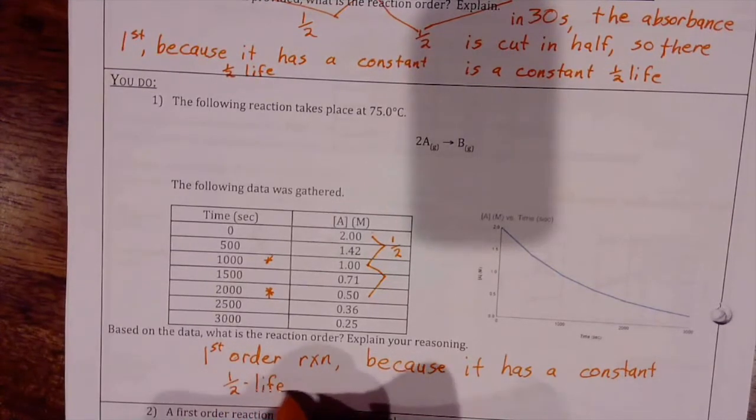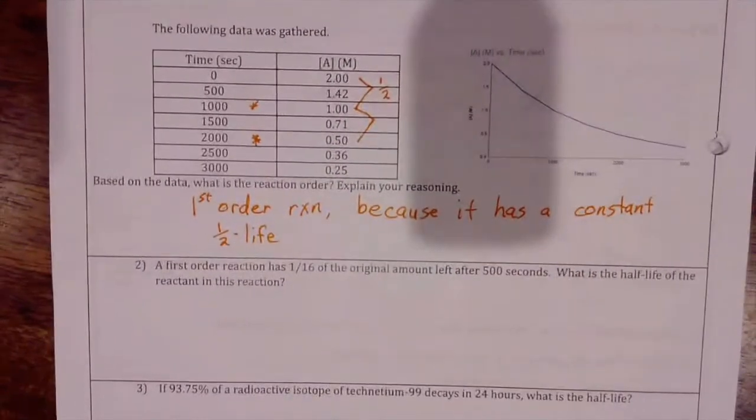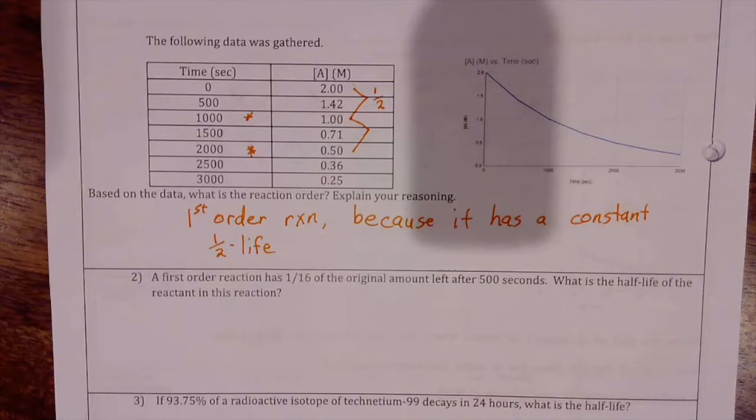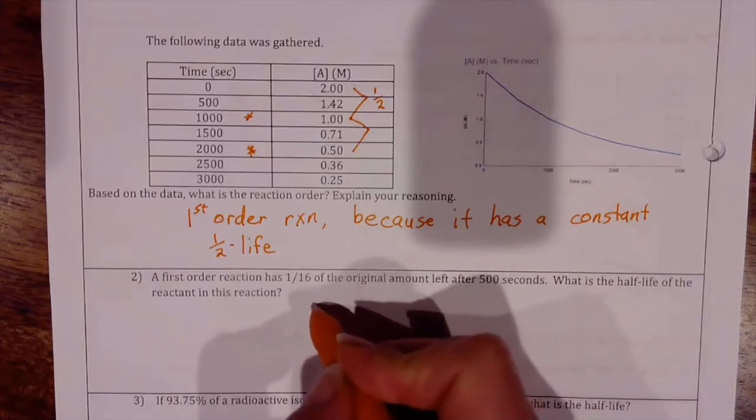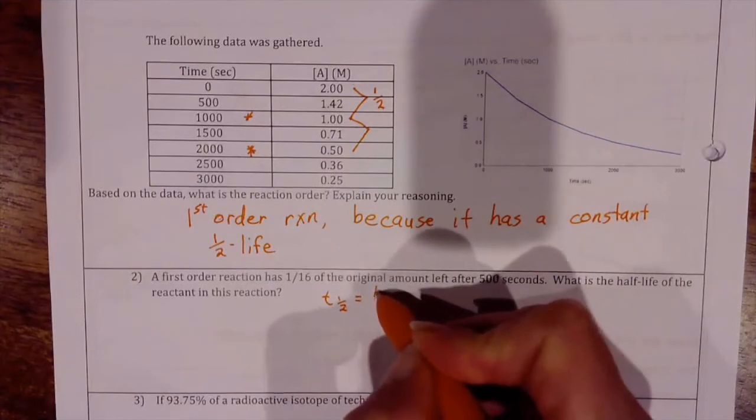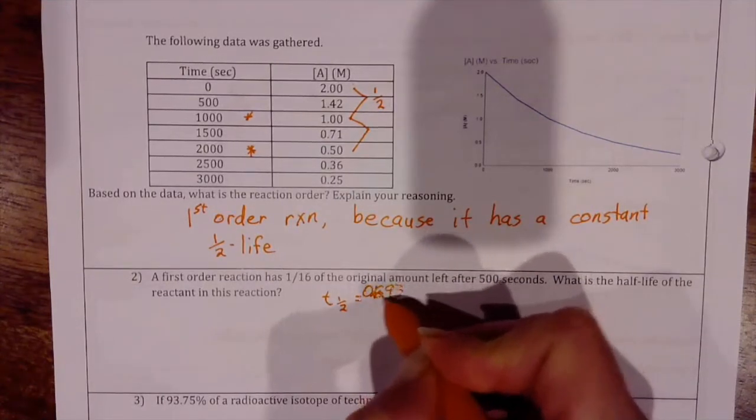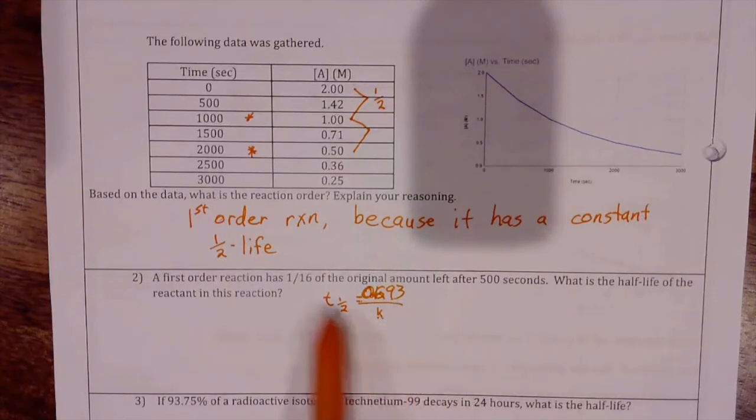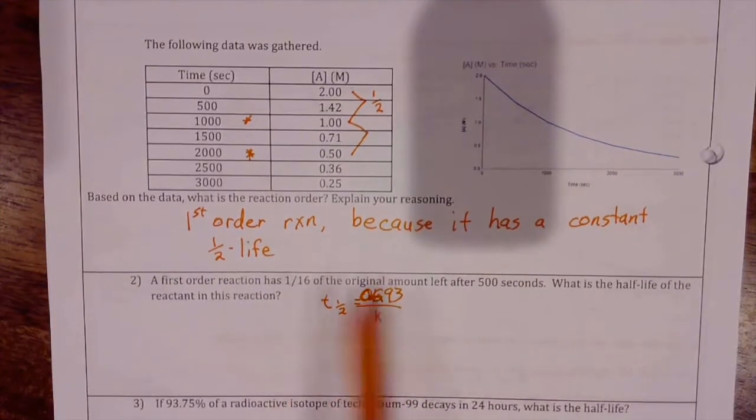Our next question tells us, a first order reaction has 1/16th of the original amount left after 500 seconds, and it asks for the half-life of the reactant in this reaction. We have a bunch of different ways that we can solve this problem. We can use the half-life equation, we know that the half-life equals 0.693 over k, but I don't know k.